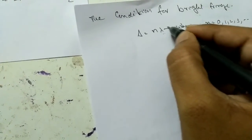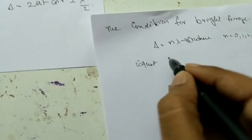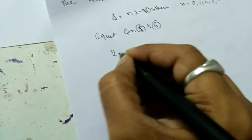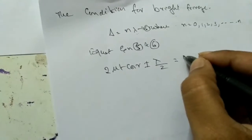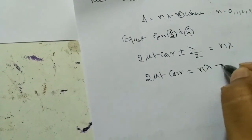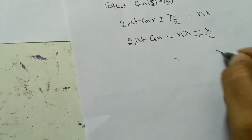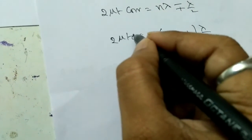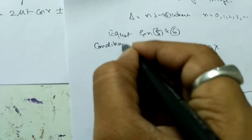Equating the effective path difference with the bright fringe condition: 2μt·cos r ± λ/2 = nλ. Therefore 2μt·cos r = nλ ∓ λ/2 = (2n ∓ 1)·λ/2. This is the condition for bright fringes.